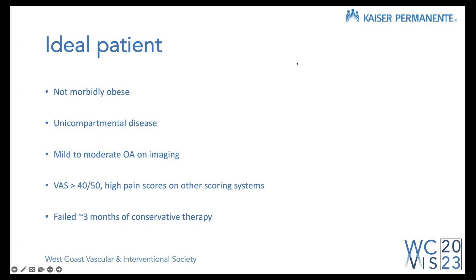The ideal patient tends to not be morbidly obese, has unilateral disease with pain that is medial, lateral, or anterior, with less severe radiographic disease, symptomatic pain scores, and has failed conservative therapy. Dr. Padia and their group have published work on patients with more severe radiographic disease, so there may be a role even for advanced disease. More trials are coming that I'm excited to learn from.